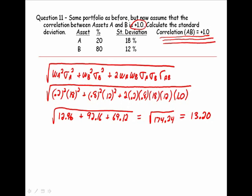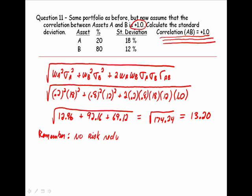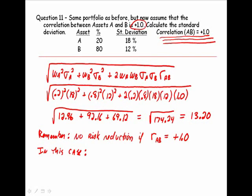This is also important. Remember that there is no risk reduction when the correlation between the two assets A and B is equal to positive 1.0. We said there is no risk reduction. In this case, and in this case only, the standard deviation of a portfolio is equal to the weighted average of the standard deviation of the assets that make up this portfolio. Only in this case, when the correlation is perfect positive.